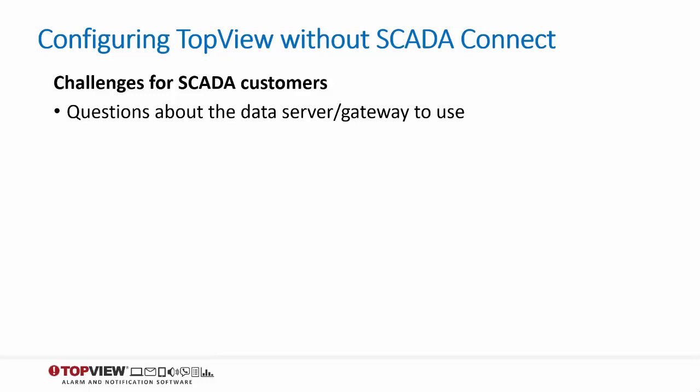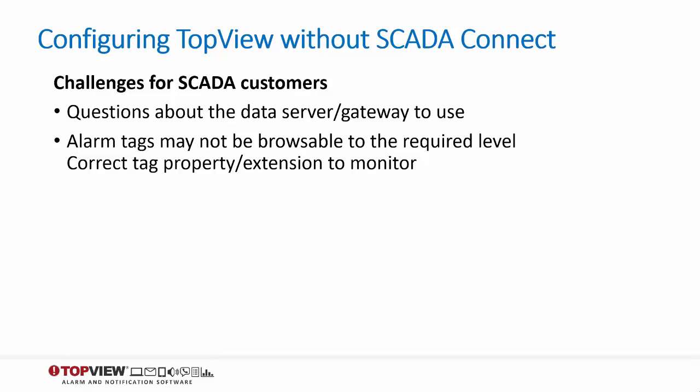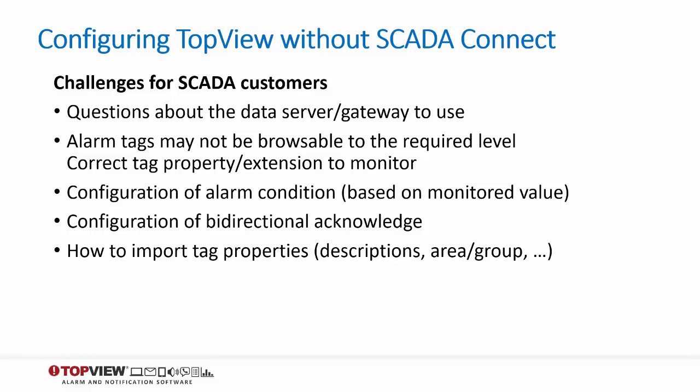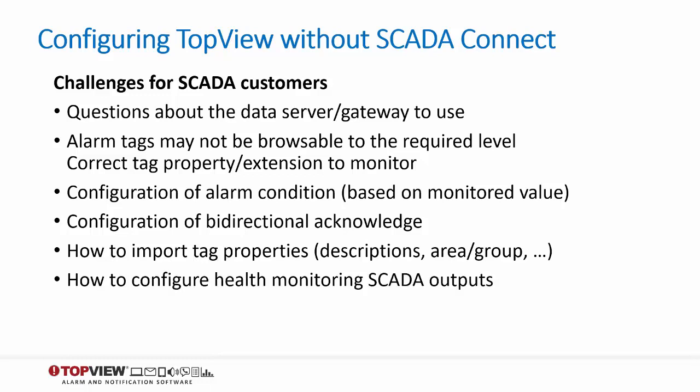First, the user must configure the gateway used to access the data server. The gateway is typically the OPC server for the SCADA, although some SCADAs have multiple OPC servers, or may require the user to perform configuration steps before clients like Top View can connect. Although tag browsing usually exists, many SCADAs do not expose the full alarm tag name with the correct extension or property required by Top View. Based on the data type of the alarm tag, the alarm condition must be configured correctly. For example, Boolean alarm tags will have an alarm condition of equals true, while some SCADAs require monitoring for a set of values or a specific bit of an integer value. For bi-directional acknowledge, the correct acknowledge tag names and acknowledge values need to be configured. Additional tag properties like alarm description, priority, and group must be imported. Optional health monitoring SCADA outputs also need to be configured.